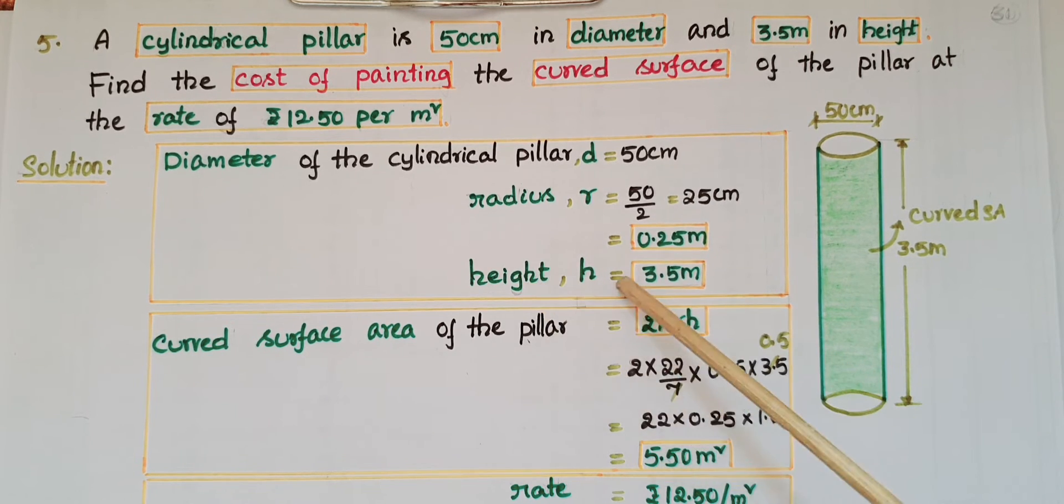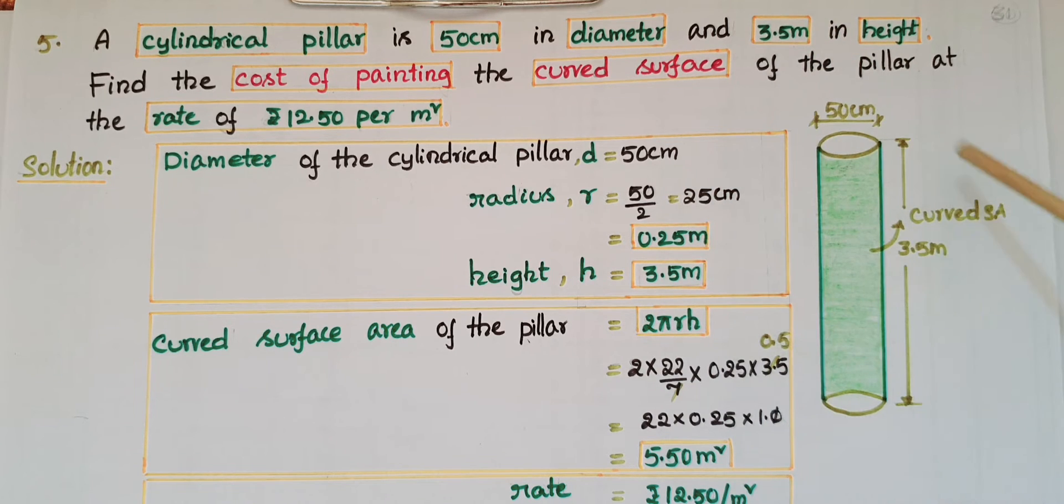We have to find the cost of painting the curved surface of the pillar, so first find the curved surface area of the pillar. That is equal to 2πrh. This is in cylindrical form, so the cylindrical surface area is 2πrh. That equals 2 into 22 by 7 (π value is 22 by 7) into r equals 0.25 into h is 3.5.